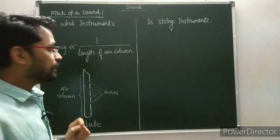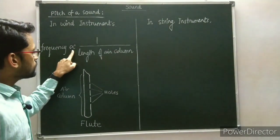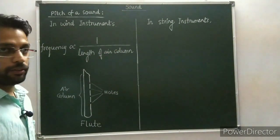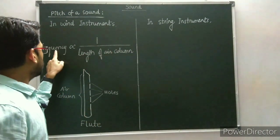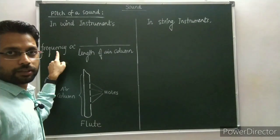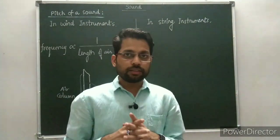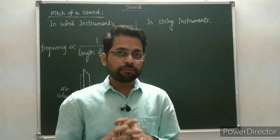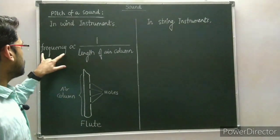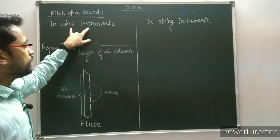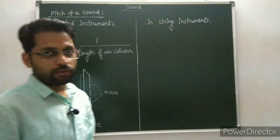The change in the length of the air column changes the frequency of the sound produced by the instrument. The frequency of the sound is inversely proportional to the length of the air column — when the length of the air column increases, the frequency decreases, and vice-versa.